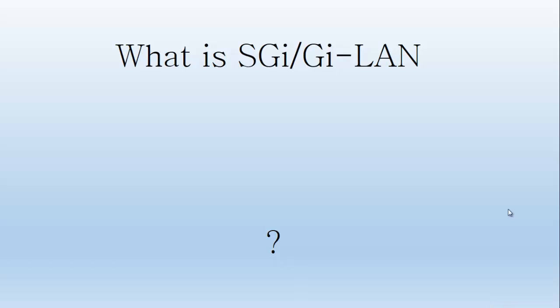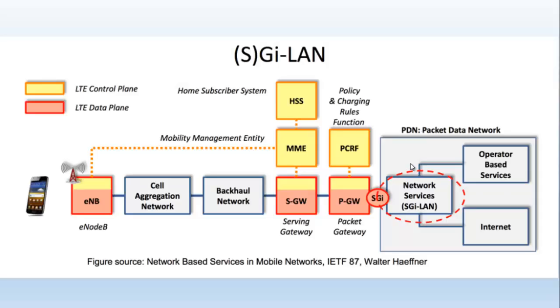In fact, according to 3GPP, one of the goals of the EPC was to have a flat architecture where user data or payload will be separated from the signaling network or control network. So, that having been said, let's see what does this interface look like.